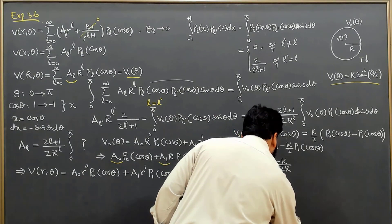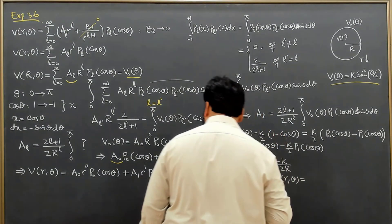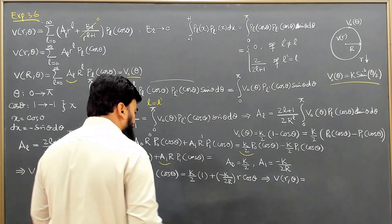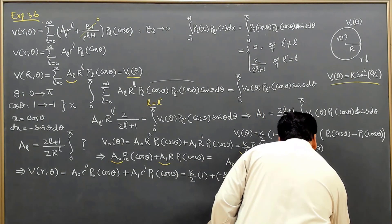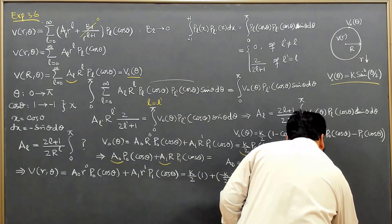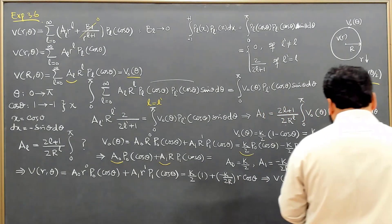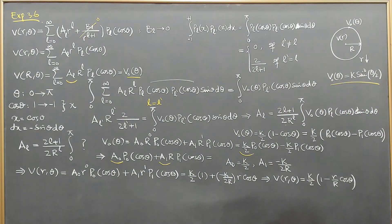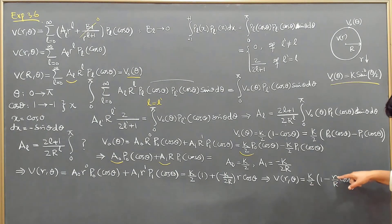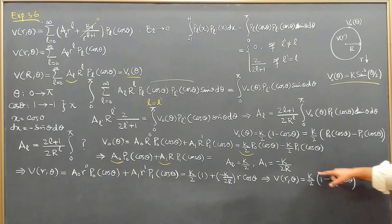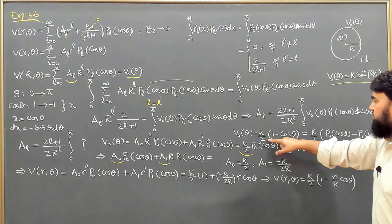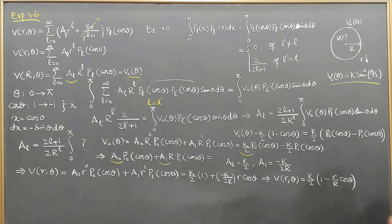Simplifying, V(r,θ) = (K/2)(1 − r/R cos θ). At the surface r = R, this becomes (K/2)(1 − cos θ), which matches V₀(θ) = K sin²(θ/2) = K(1 − cos θ)/2. So we have verified the final solution.